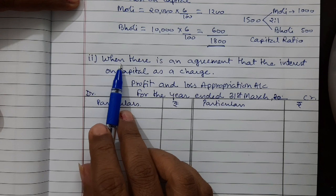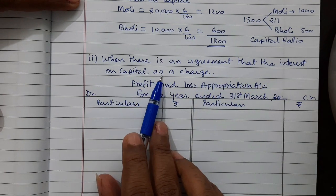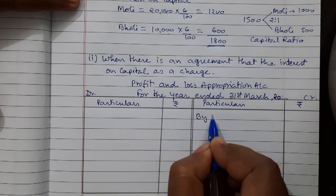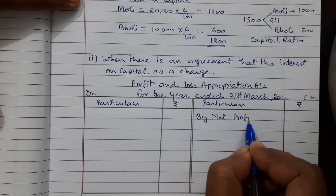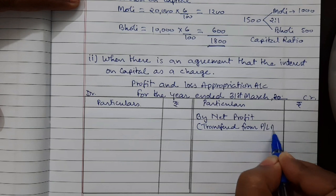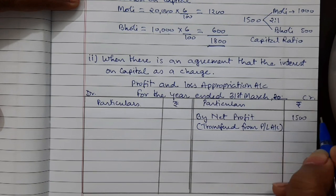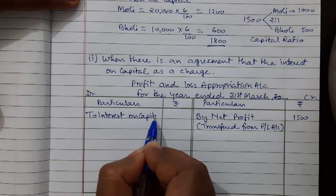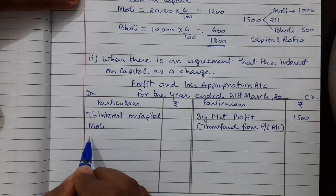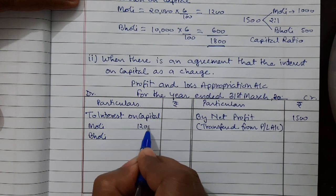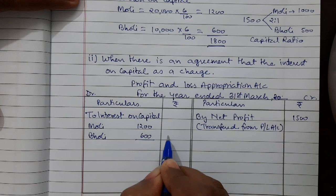The second part of the question: when there is an agreement that interest on capital is a charge, it means irrespective of net profit, we must charge full interest on capital. Net profit as transferred from Profit and Loss account is rupees 1,500. Interest on capital: for Moly it is rupees 1,200 and for Bholi it is rupees 600, totalling rupees 1,800.